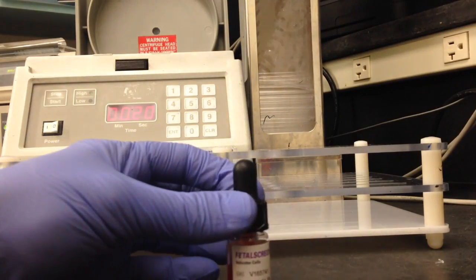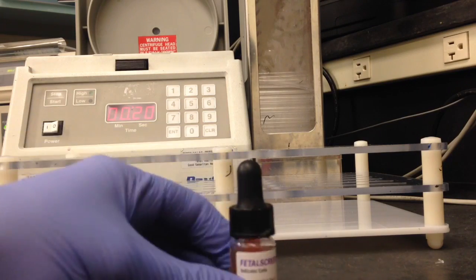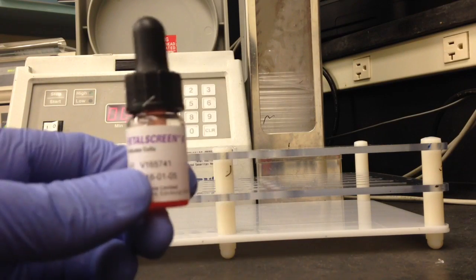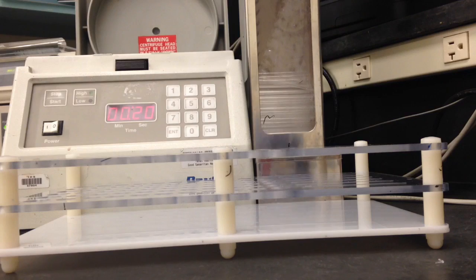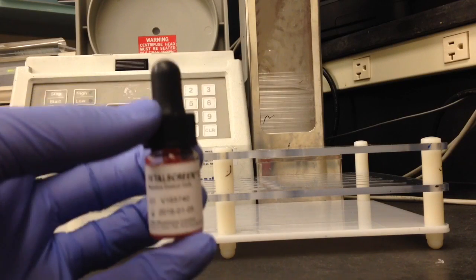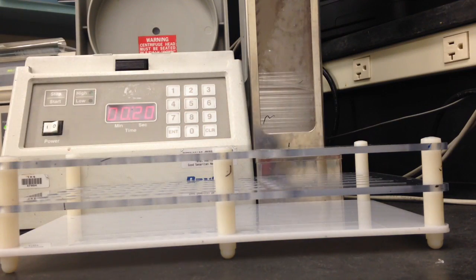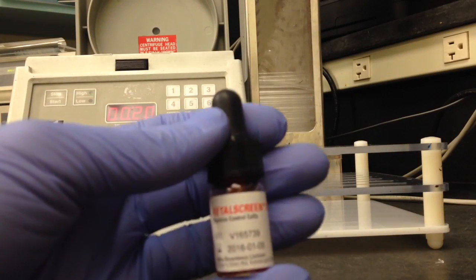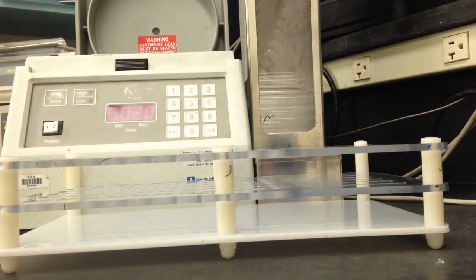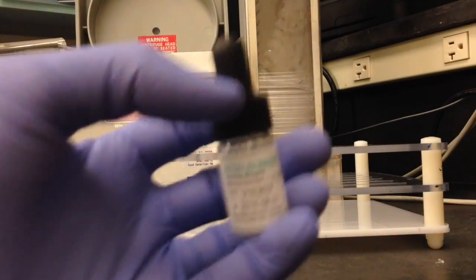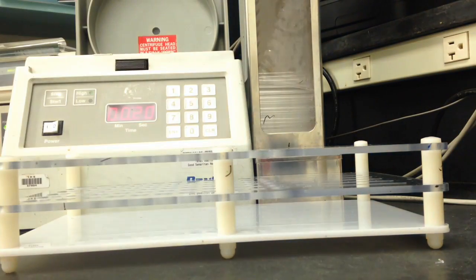You're going to need the kit contents which includes the indicator cells, a positive and a negative control which I'm going to be using as my specimens since I don't actually have a patient, and then you're also going to need the antibody reagent.